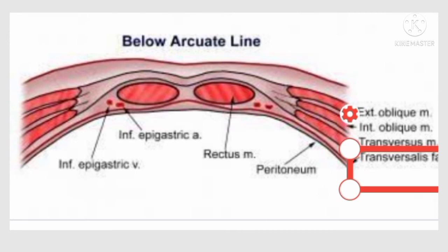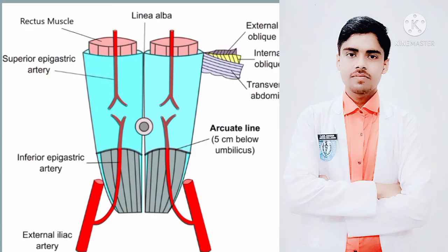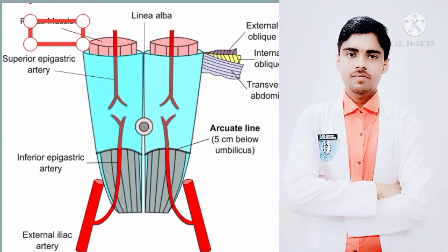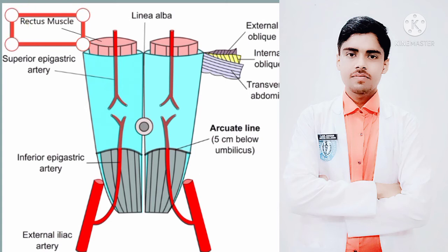Now we will discuss about the contents of the rectus sheath. Firstly, the muscular content: as you can see in the figure, the rectus abdominis muscle and the pyramidalis muscle are present within the rectus sheath.